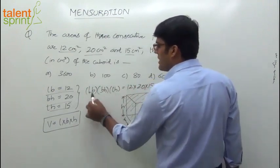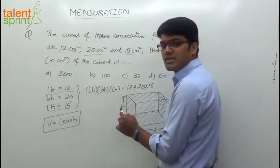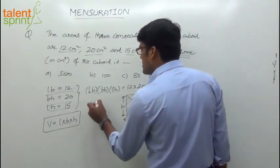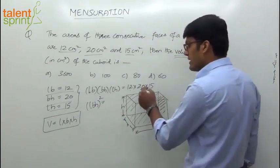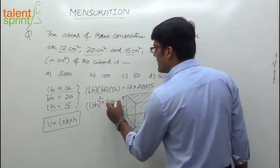What do we get if you multiply all of them? LB into BH into LH equals 12 into 20 into 15. Now if you observe, L into L is L squared, B into B is B squared, H into H is H squared. So that's LBH whole squared equals 12 into 20 into 15, which is 3600.